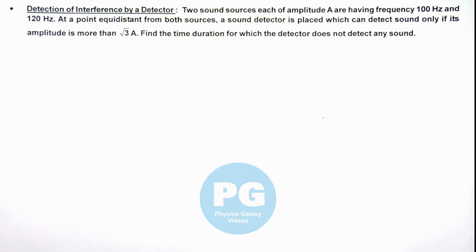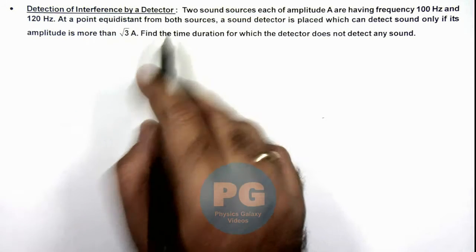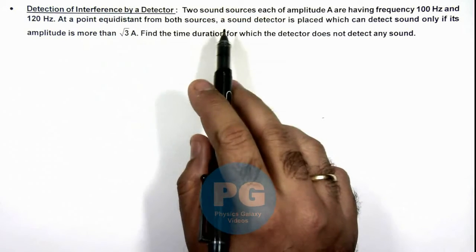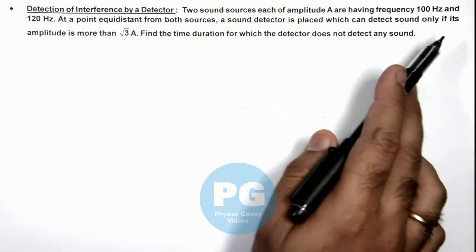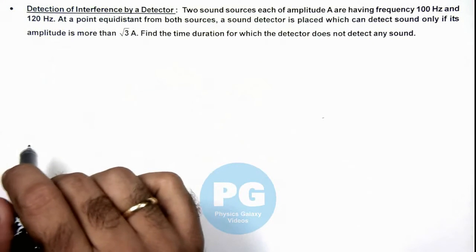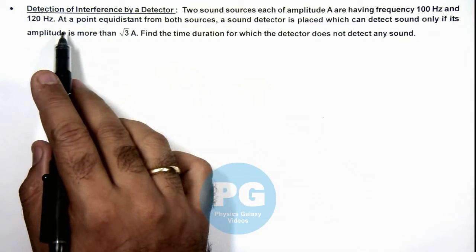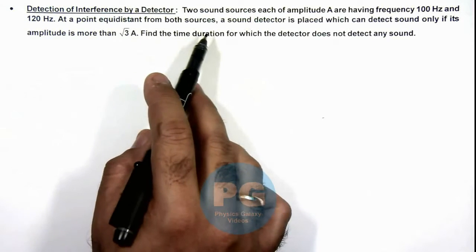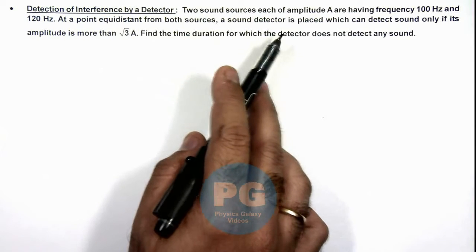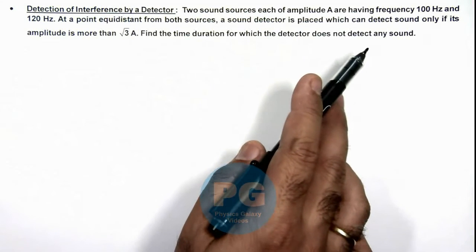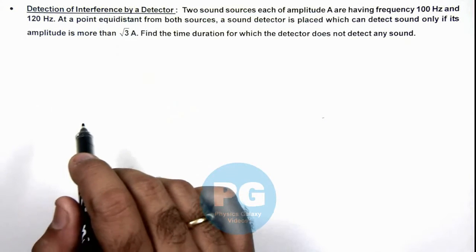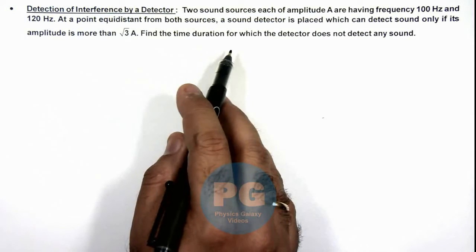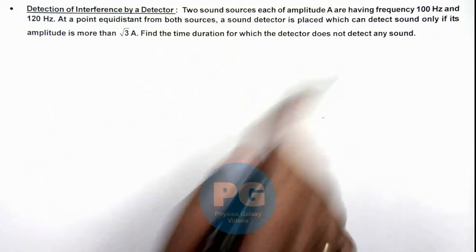In this illustration we'll analyze the detection of interference by a detector. We are given 2 sound sources each of amplitude A, having frequencies 100 Hz and 120 Hz. At a point equidistant from both the sources, a sound detector is placed which can detect sound only if its amplitude is more than √3·A. We are required to find the duration for which the detector does not detect any sound.